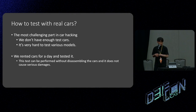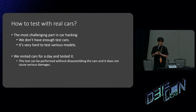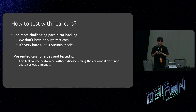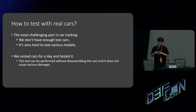Now let's talk about testing with real cars. This is the most challenging part in car hacking because we don't have enough test cars. Even with good ideas, it's difficult to prove them on real cars. Luckily, our fuzzing test can be performed without disassembling the car and does not cause serious damage. So we can test using rental cars — we rented cars for a day or a few hours and tested them. There were not many different types of cars available to rent, but we rented as many as possible.